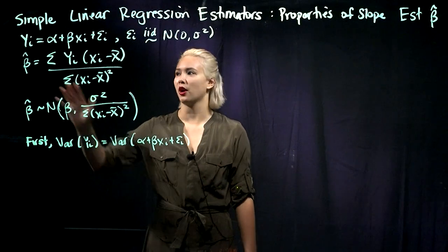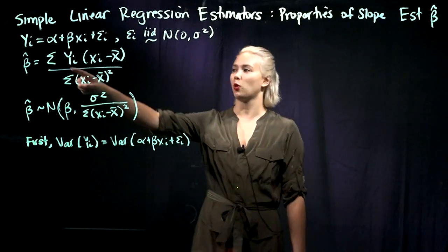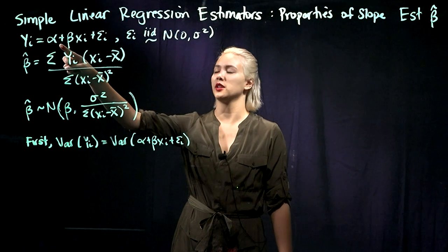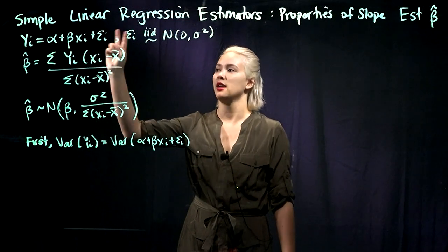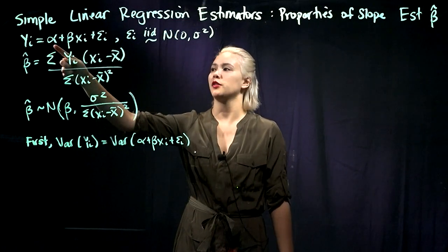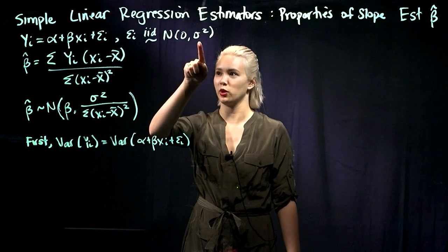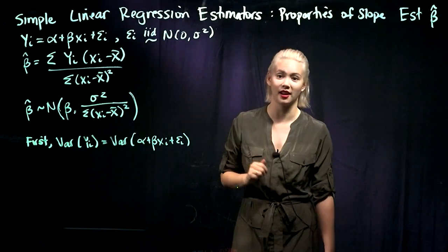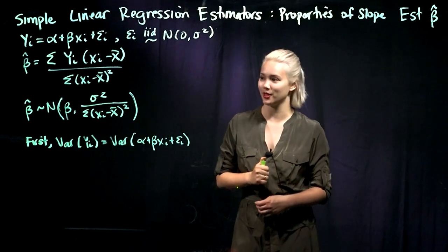Our form for simple linear regression is yi equals alpha plus beta xi plus epsilon i. The parameters that we're estimating are alpha, beta, and sigma squared, where the epsilons are iid normal zero sigma squared.